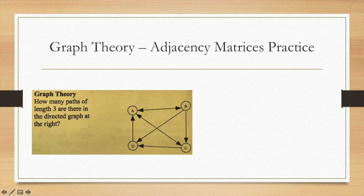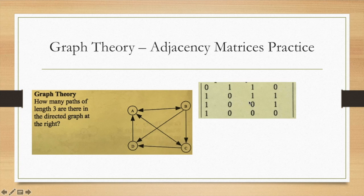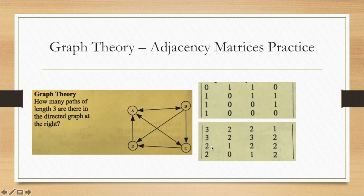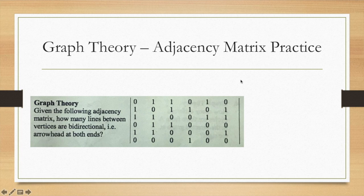For example here's a question: how many paths of length three are there in the directed graph at right? You get that adjacency matrix and then you cube it and the result is three two two one three two three two two one two two zero one two. As a side note you cannot get from d to b in three steps, whereas you can get from d to c in one way. You could go a to a in three ways: a c b a, a c d a, or a b d a. Once you look at this you see that there are a total of three plus two plus two plus one plus three plus two plus three plus two and so on for a total answer of 30 paths of length three.